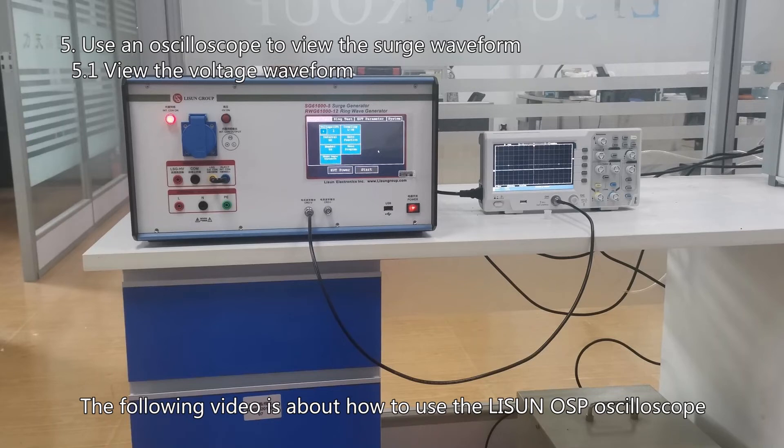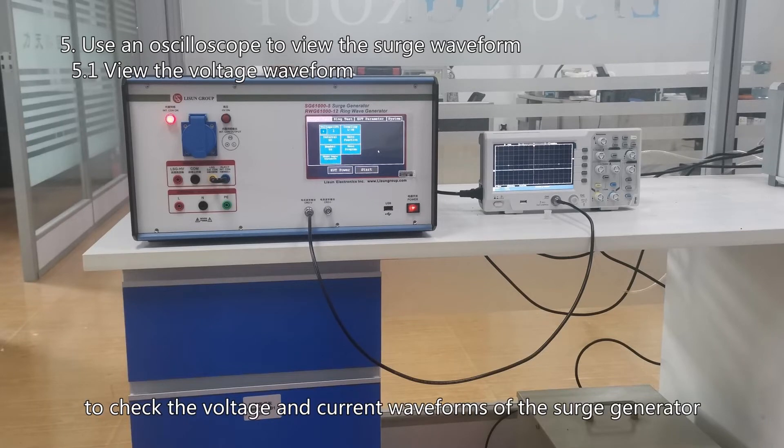The following video is about how to use the LACYDN OSP oscilloscope to check the voltage and current waveforms of the surge generator.